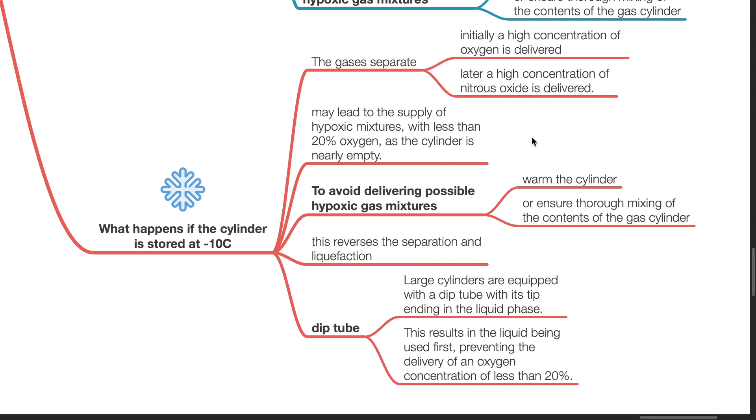This leads to a supply of hypoxic mixture with less than 20% oxygen as the cylinder is nearly empty. To avoid delivering possible hypoxic gas mixture, warm the cylinder or ensure thorough mixing of the contents. This reverses the separation and liquefaction.